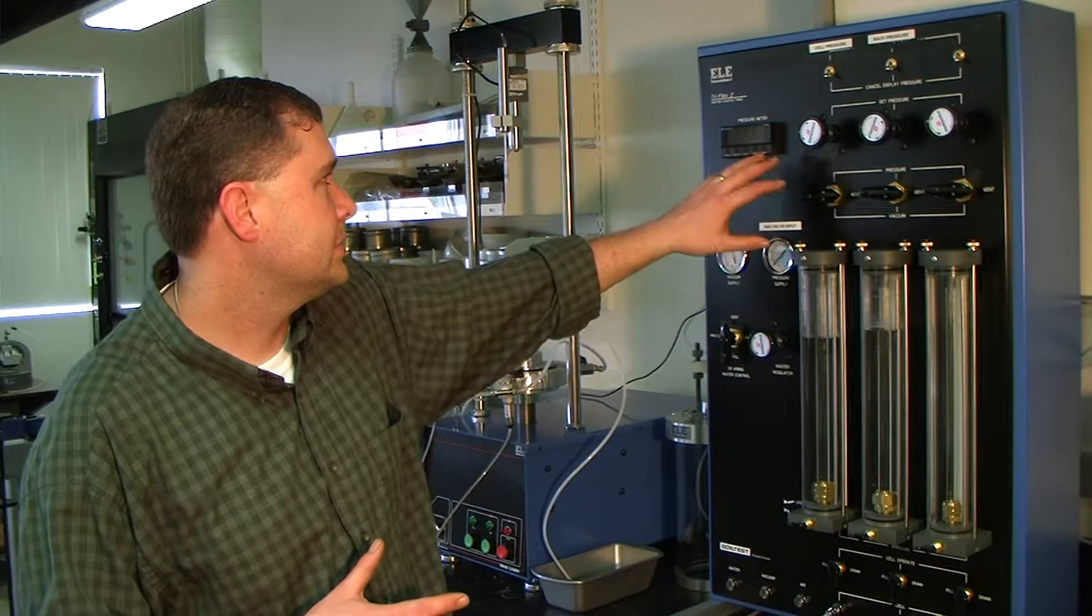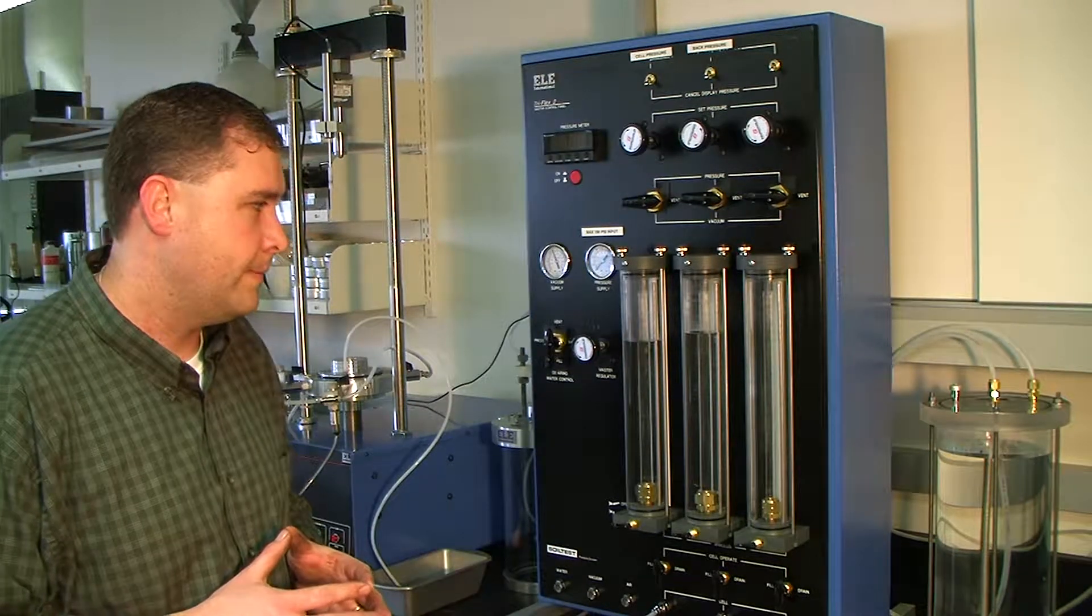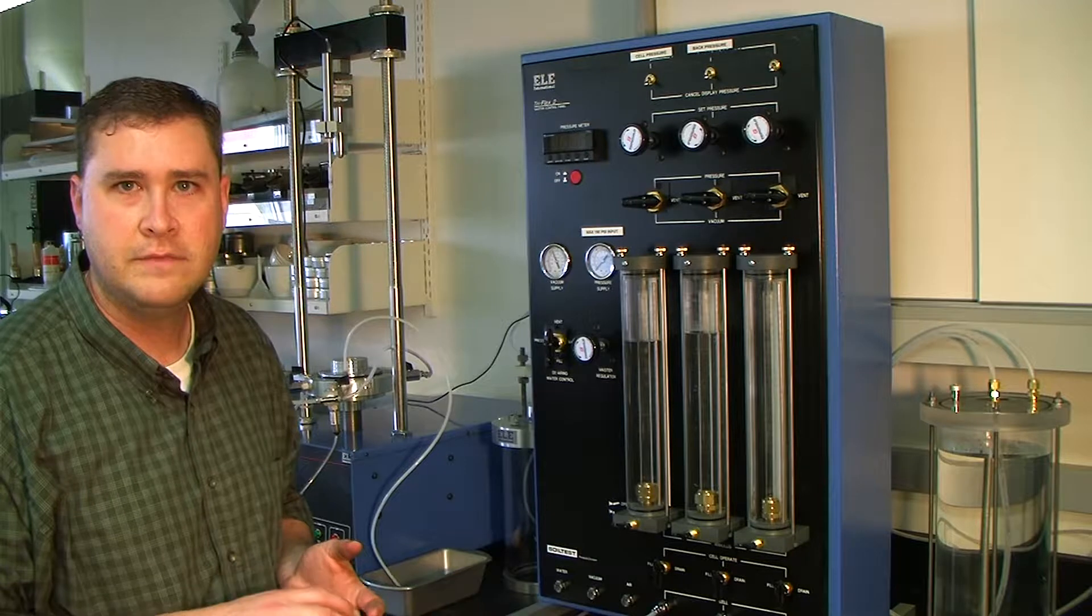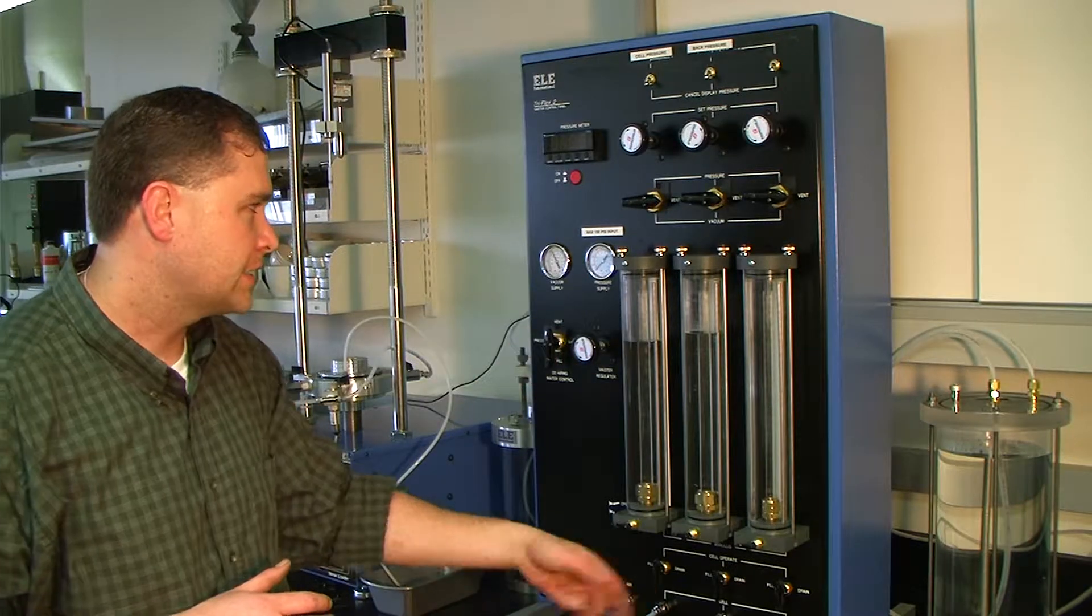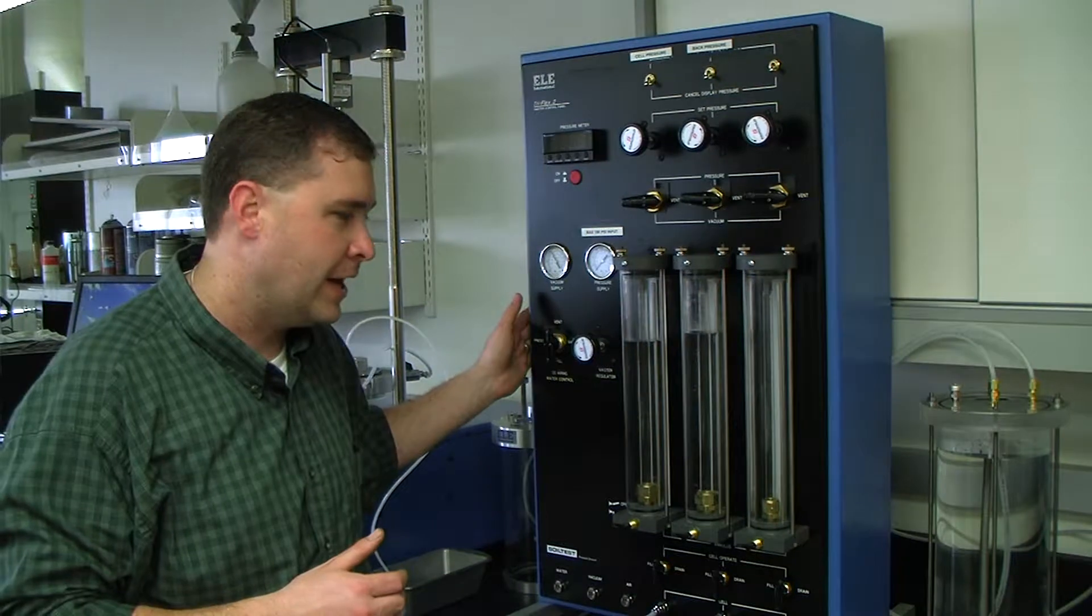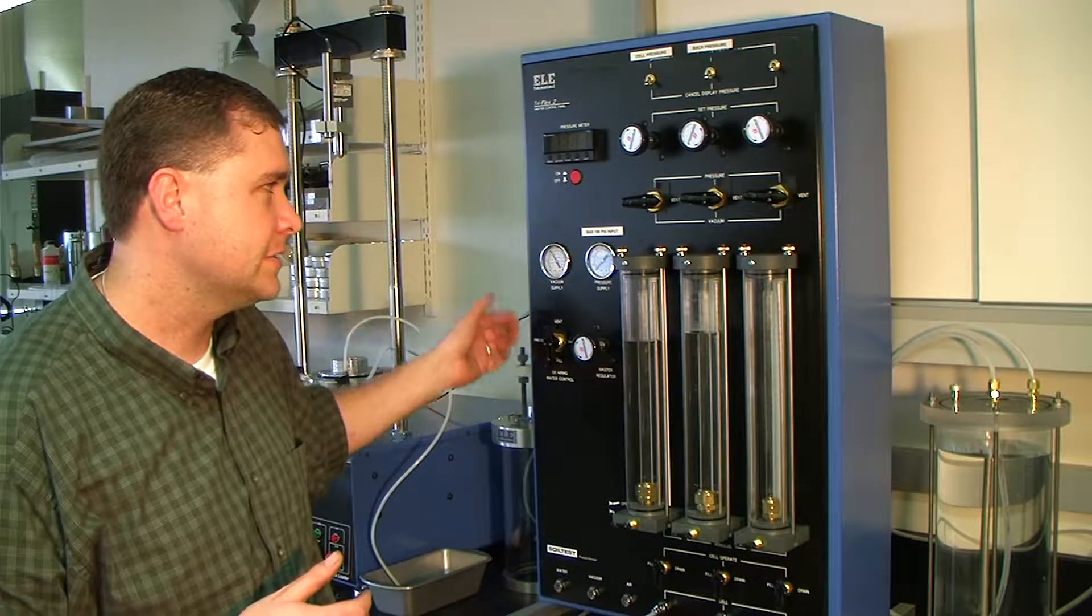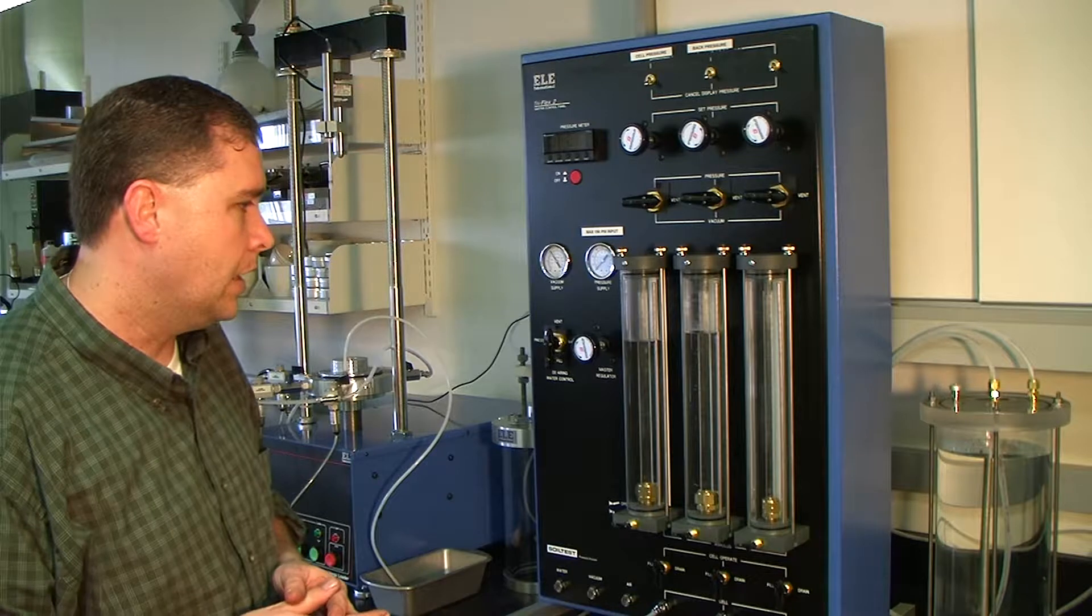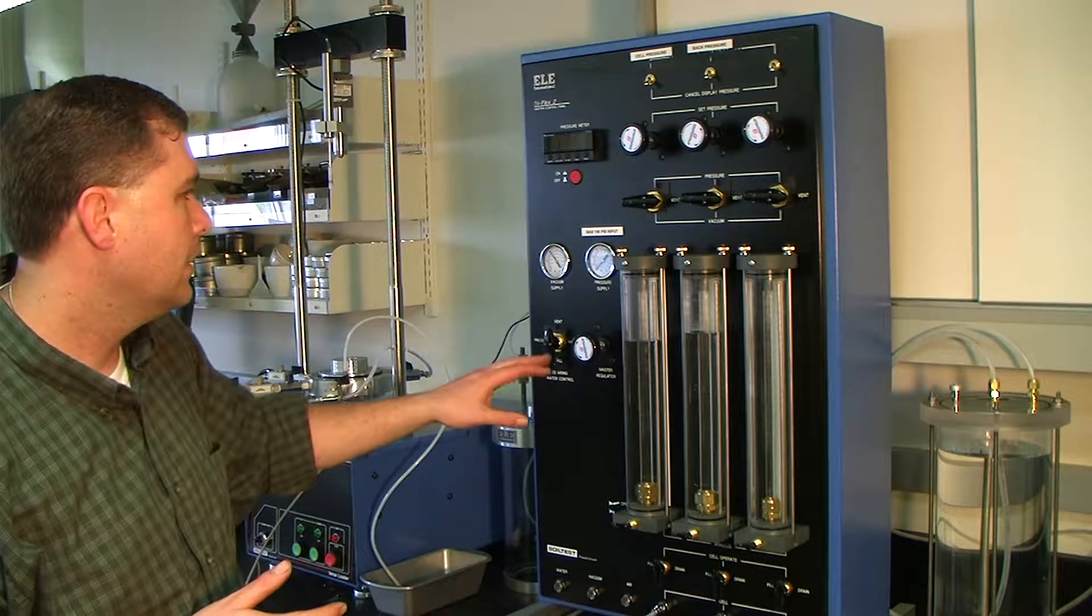The first piece of equipment we'll talk about is something called the Triflex II Master Control Panel. This is the panel that is designed to be a hub, a communication hub of all of the supply lines as far as air, water, vacuum, and drainage. It can feed into one location and then expel the appropriate water and pressure to the sample for the testing.